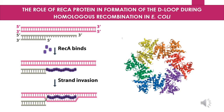Now let us see how strand invasion occurs. There is a role of specific proteins called RecA proteins, which are 38 kD proteins, in formation of a D-loop during homologous recombination in E. coli. These RecA proteins are involved in pairing of the DNA strands. RecA first binds to the 3' extension produced by RecBCD proteins, then this 3' extension inserts inside the facing homologous DNA strand leading to strand invasion. Another nick is formed before the CHI site and leads to formation of the heteroduplex.